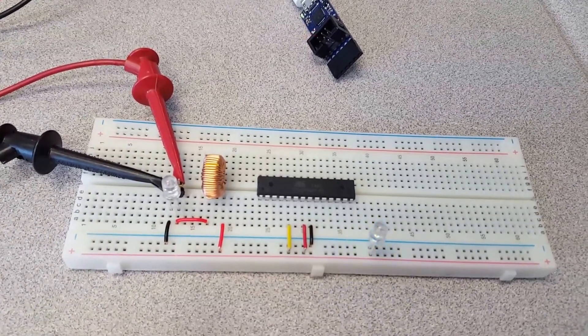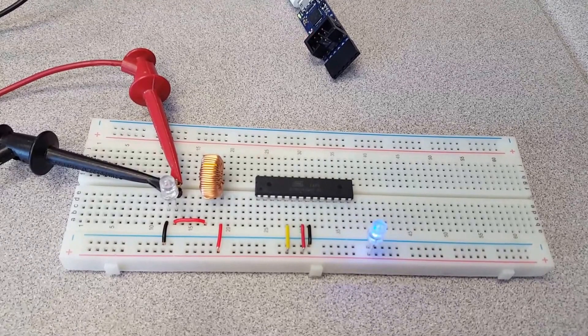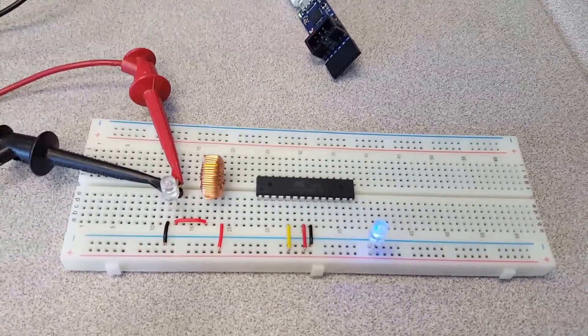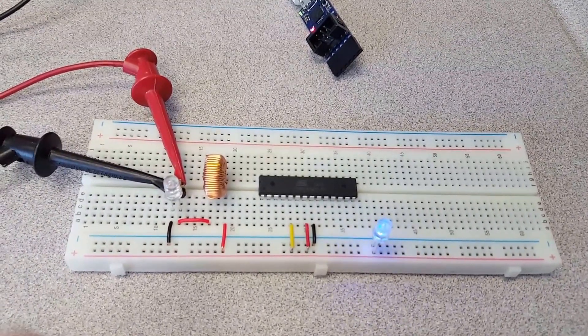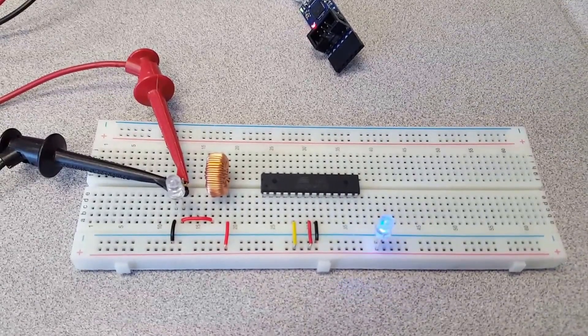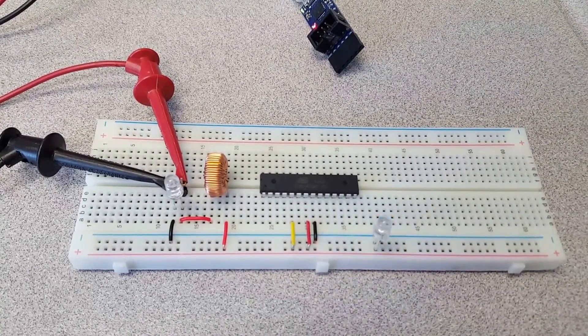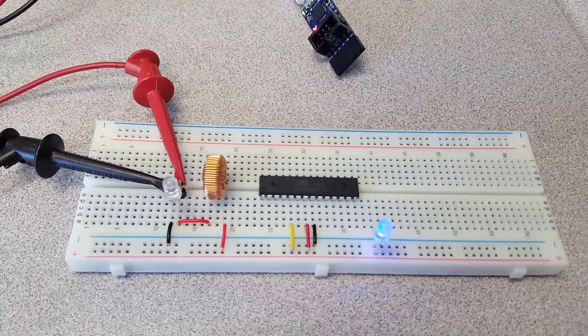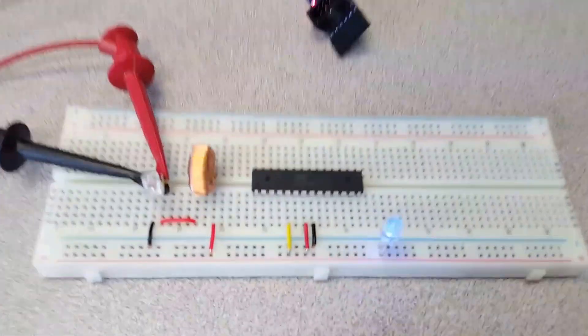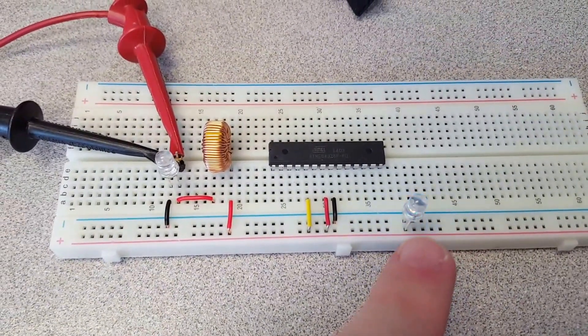So when it drives that line low, the increased current consumption and the inductor cause a drop on VCC. When it stops driving that I.O. line low, the opposite happens, and the inductor causes a boost on VCC by about 1 volt, and it's enough to power that blue LED.